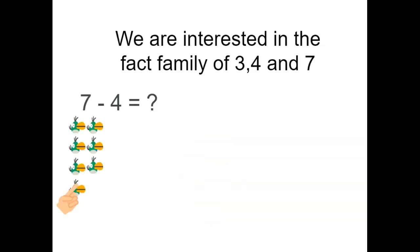What about some subtractions? Here we have 7 birds. And now we're going to take away 4 of them. 2, 3, 4. How many are left? There are 3 birds left. So, the first one is 7 minus 4 equals 3.